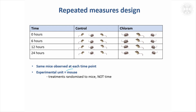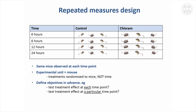It's important to realize the experimental unit is the mice. So you've effectively got six mice — three in each group — and when you come to analyze the data it's three versus three. You haven't really got 12 versus 12, so you can't consider these observations as independent.